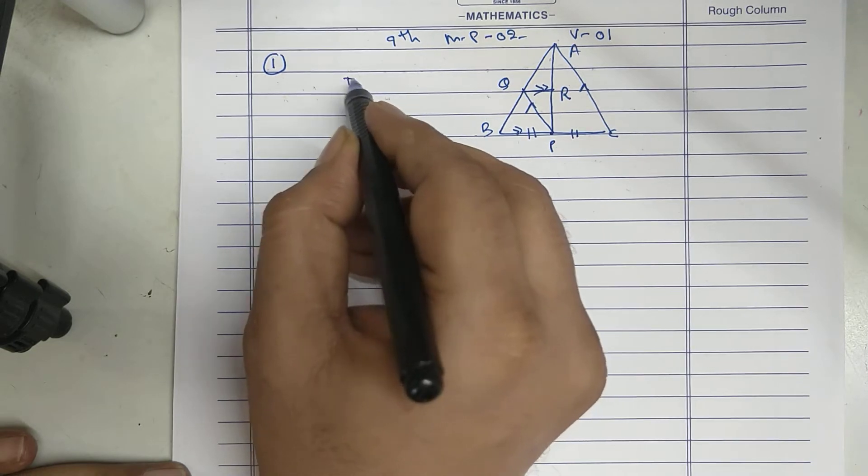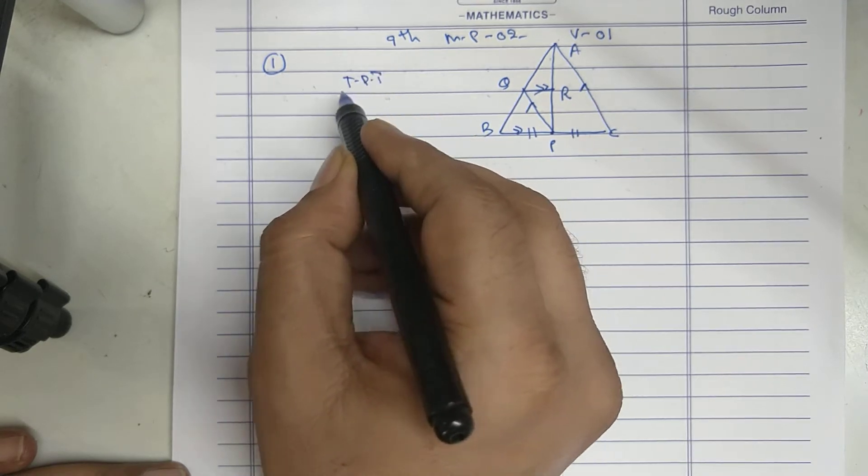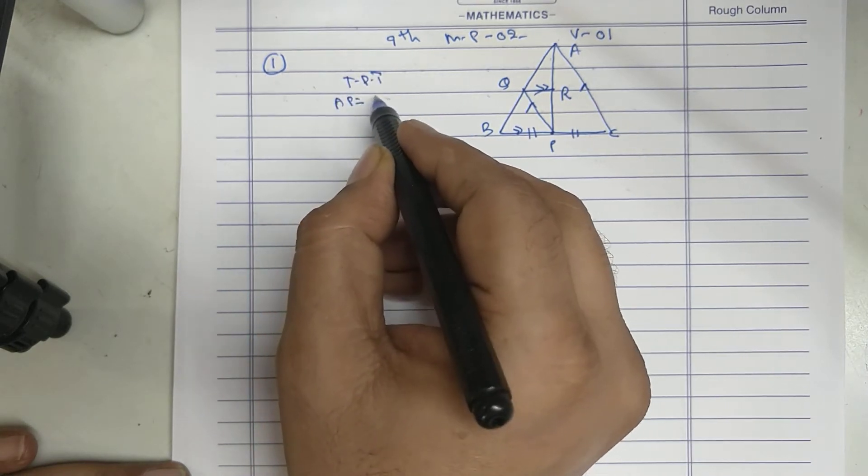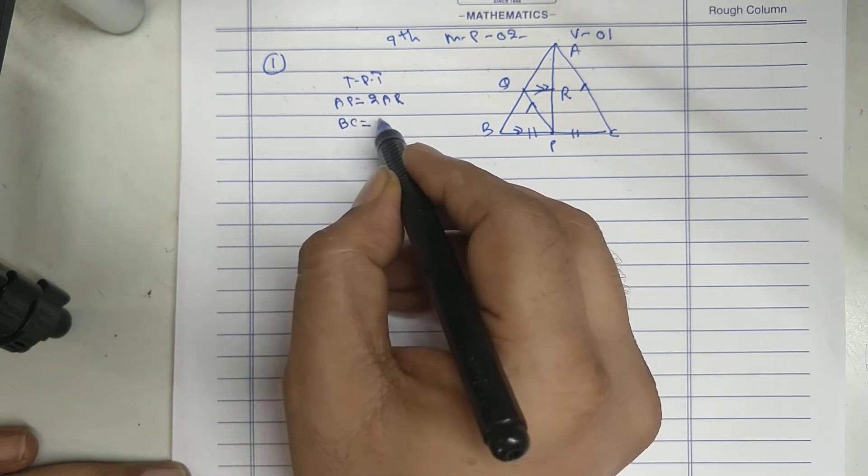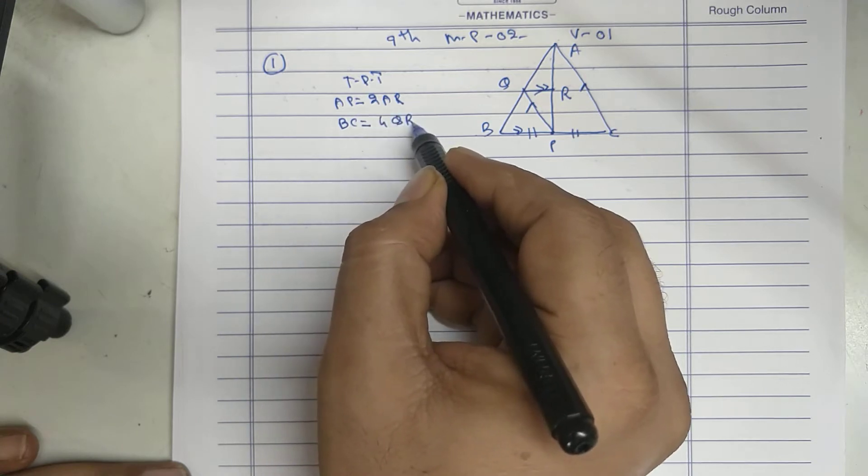I have to prove that AP is twice AR and BC is 4 times QR.